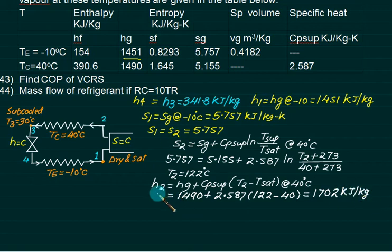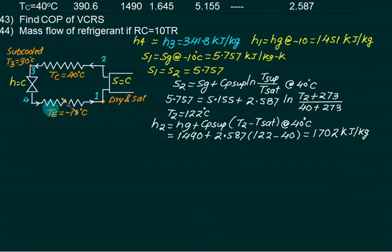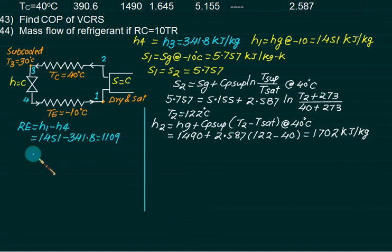This is the normal procedure to calculate. We want COP. For COP, we will first calculate Re, which is H1 minus H4 for the evaporator. Then compressor work is H2 minus H1. Your answer is 1109 for Re and 251 for W. COP is Re by W, which is 4.4.